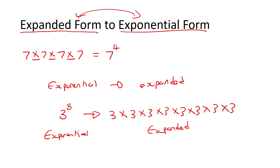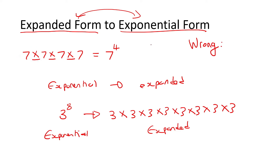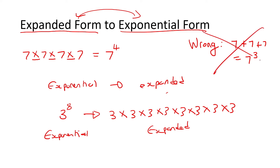A lot of learners get so used to this, and then they forget, and suddenly in the test the teacher writes 7 plus 7 plus 7, and a lot of learners write it as exponential. But it's pluses in between — we don't want pluses in between, so that is completely wrong. Make sure it's multiply. Must be a multiply in between.